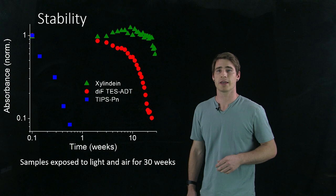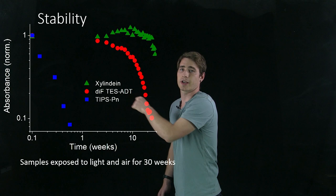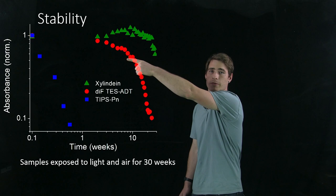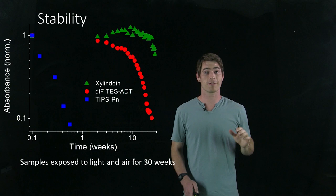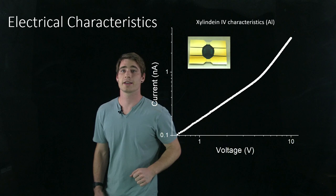We see that the absorption spectrum decays just after a few days in certain organic semiconductors. And our stable organic semiconductor, this red one here, it decays after about 5 weeks. However, xylundine lasts about 5 times longer than that, so it's very stable.